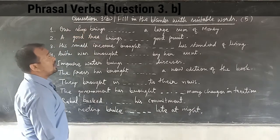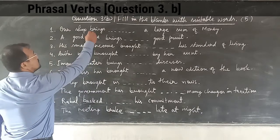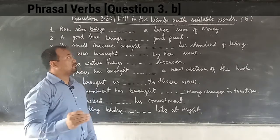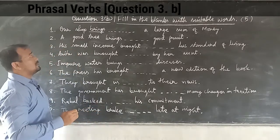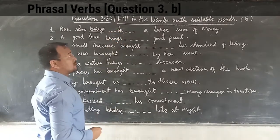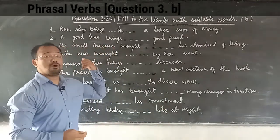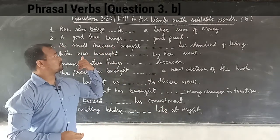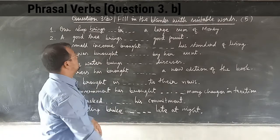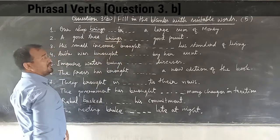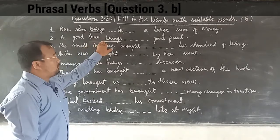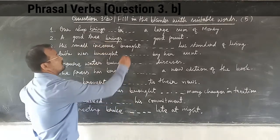Question one: 'Our shop brings ___ a large sum of money.' The appropriate phrasal verb with 'brings' here is 'brings in' — meaning the shop brought in a large sum of money. Question two: 'A good tree brings ___ good fruit.' The appropriate phrasal verb here is 'brings out'.